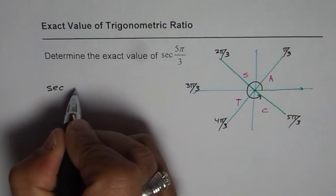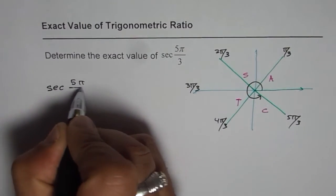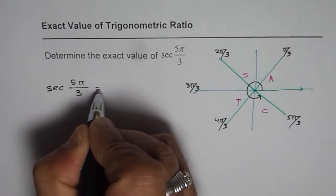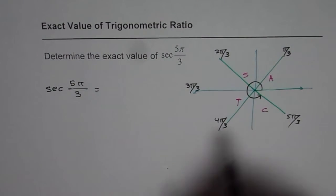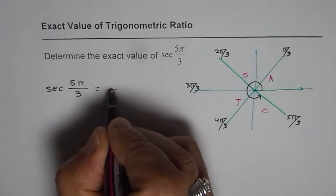So now let's write down. We have secant 5 pi by 3, which equals 1 over cos. Now since cos is positive this value is going to be positive for us.